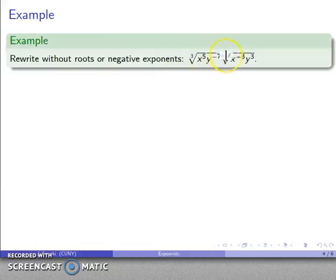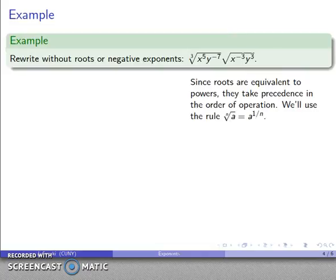Let's say we want to rewrite an expression involving roots and negative exponents. And let's see if we can rewrite it without the roots and without the negative exponents. So roots are equivalent to powers. And in the order of operations, powers come first. So what I have here is I have a root. And I'll convert those using the rule the nth root of a is the same as a to power 1 over n.